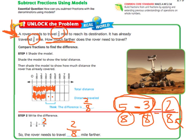So again, to review the model, you color in how far the total is that it needs to go, color in how far it's gone so far, and then your answer will just be these extra that have not been colored in yet.